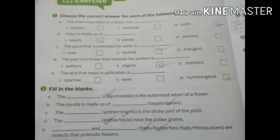Now number C: The blank is the sticky part of the pistil. Answer is Stigma. Now number D: The blank have the pollen grains. Answer is Anther. Now number E: Blank and blank are insects that pollinate flowers. Answer is bees and butterflies.